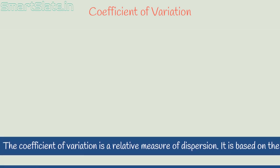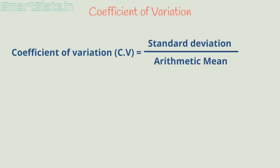Coefficient of variation CV is equal to standard deviation by arithmetic mean into 100. Coefficient of variation is sometimes shortly referred as CV.